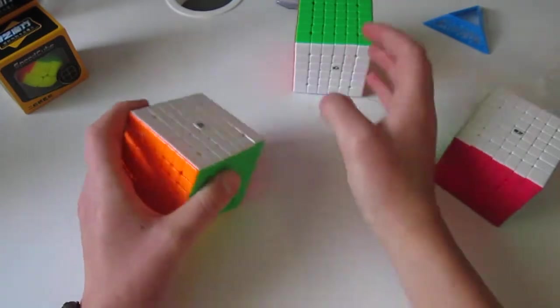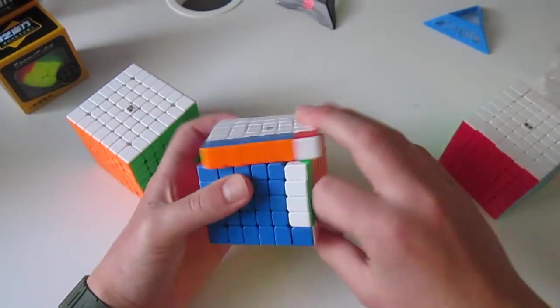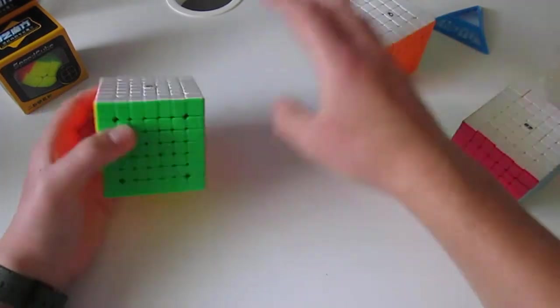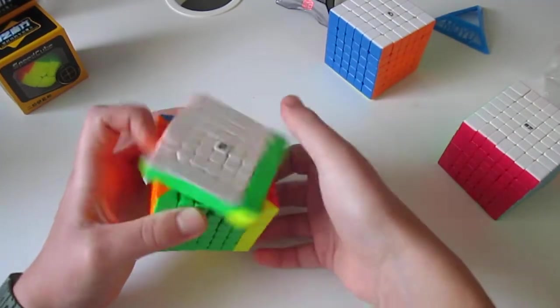And yeah. It has caps on the centers. Which, one annoying thing about the Yoshi 646 is that the caps would sometimes come off. But it'll probably be okay. But yeah, this feels amazing.